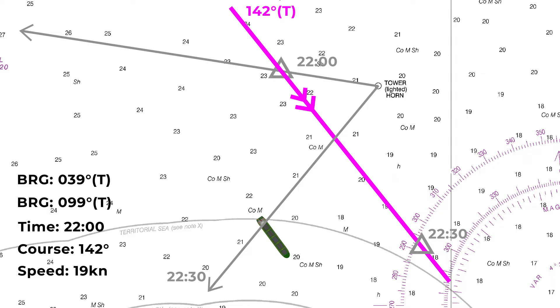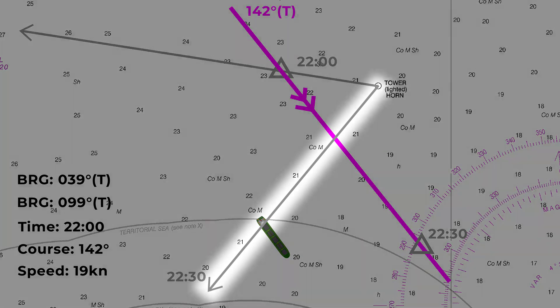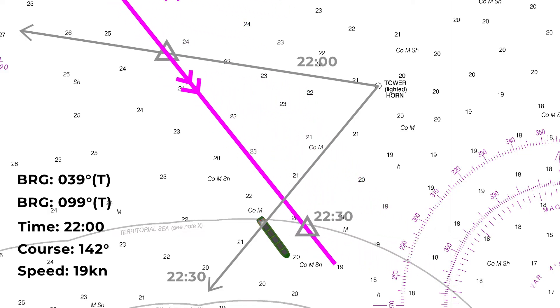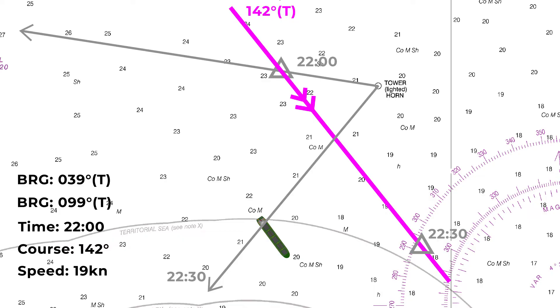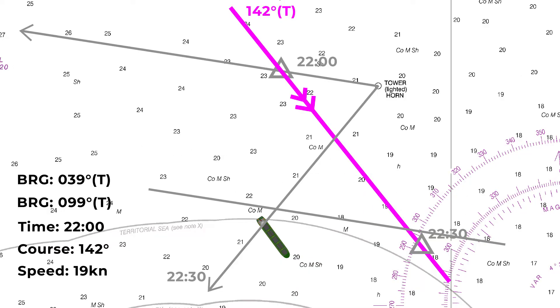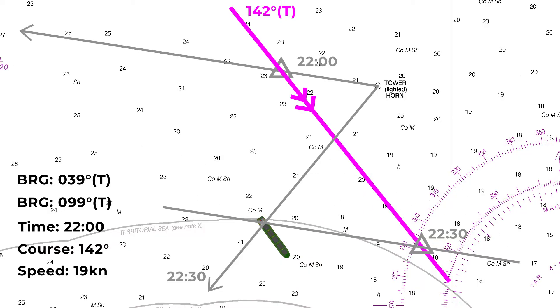Now something doesn't quite match up here, because we've got this line of position saying we are somewhere along this line, but we've also got this estimated position saying we reckon we're going to be here at 2230, so something is amiss. Remember though, that estimated position was actually just a complete random guess along our previous line of position. So to make it more accurate, what we can do is transfer that initial line of position, because that's transferring our earlier uncertainty — we knew we were somewhere along that line, we just didn't know where, so we made a best guess.